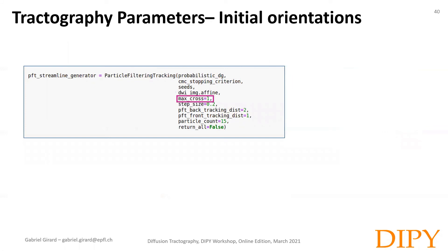When creating your streamline generator, there's a parameter called max_cross. When set to 1, the initial orientation will be the orientation of maximum diffusivity or the peak with the highest fiber ODF value. If this value is higher, it will start up to that many streamlines — one for each of the peaks at the seed location. Thus, one seed location can generate multiple streamlines.